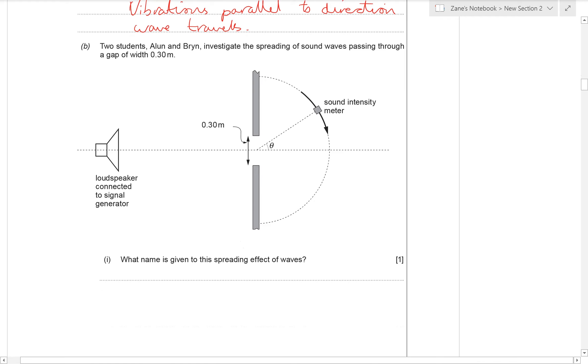Next in the question two students Alan and Bryn are investigating the spreading of sound waves passing through a gap which has got a width of 0.3 meters and we have a diagram showing the setup of their experiment including a sound intensity meter. The name given to this spreading effect of waves is diffraction.